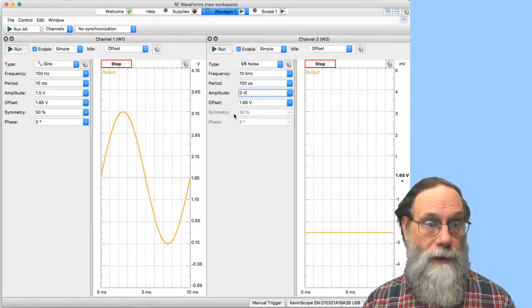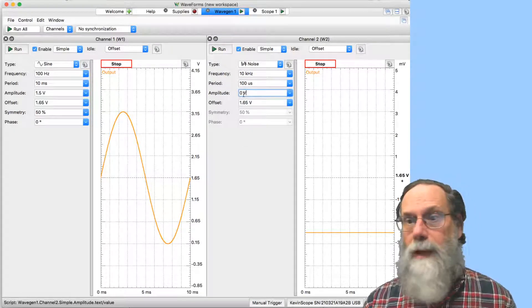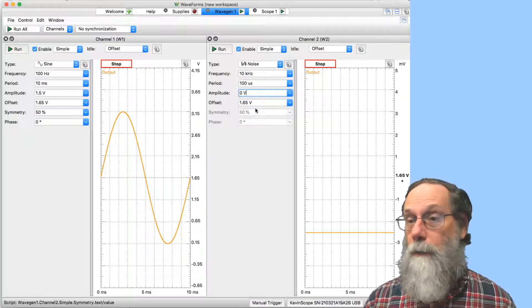Channel 2, the second waveform generator, I've got an amplitude here of 0 volts, so I'm not really putting out any signal, but an offset of 1.65 volts.